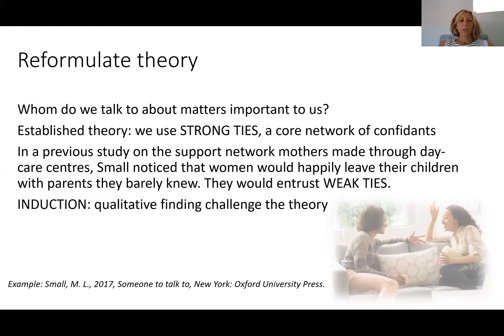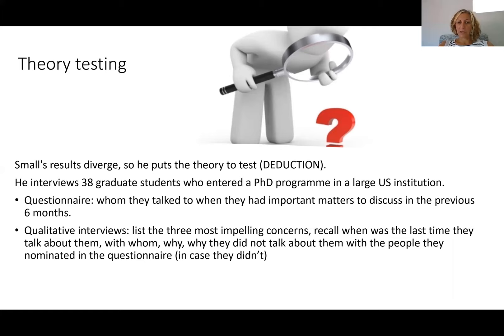He designed a very small, tailored qualitative study in which he interviewed 38 graduate students entering a PhD programme at a large US institution. He administered to them the same GSS questionnaire that Burt administered in the US, asking who they talk to when they have something important to discuss. He then conducted qualitative interviews where he swapped around the question and asked students to list their three most pressing concerns, recall when was the last time they talked about them, with whom, why, and why they didn't talk to the people nominated in the questionnaire, in case they didn't.